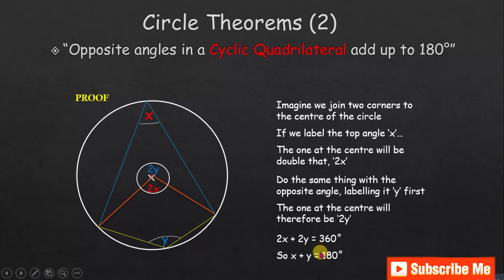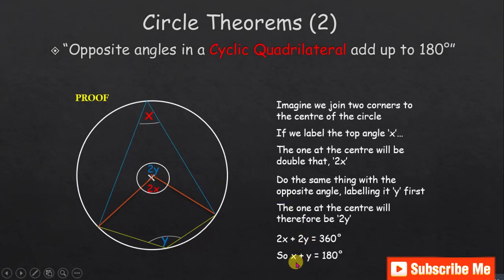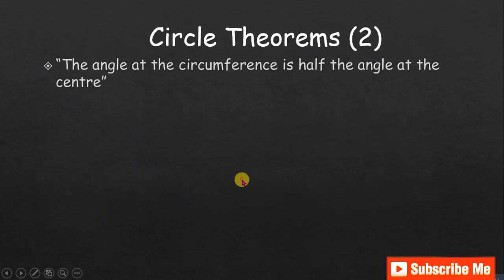The theorem is proved. This property — that the angle at the center is twice the angle at the circumference — is covered in another video; the link is in the description. With that property, we confirm that 2x plus 2y gives 360 degrees, and therefore x plus y equals 180 degrees.